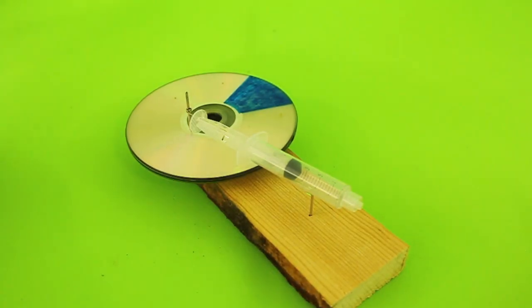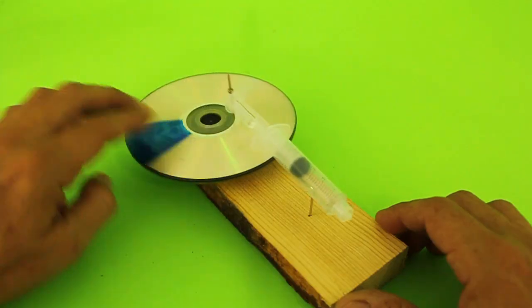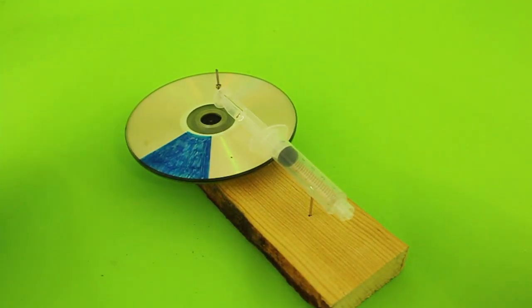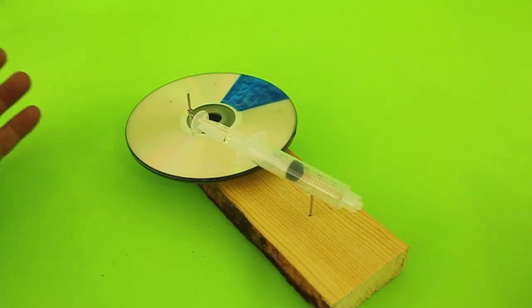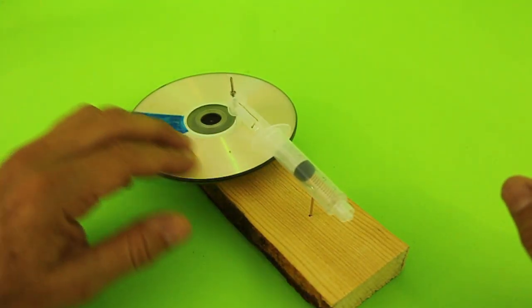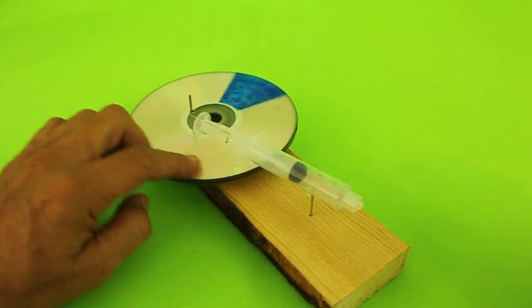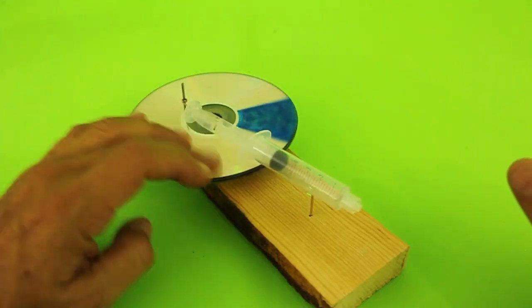Today I will show you how to make very easily this pneumatic engine which is based on a type of steam engine known as the wobbler engine or oscillating engine, but this uses air instead of steam. The name comes from the fact that the cylinder, as you can see, is oscillating during the movement of the engine.